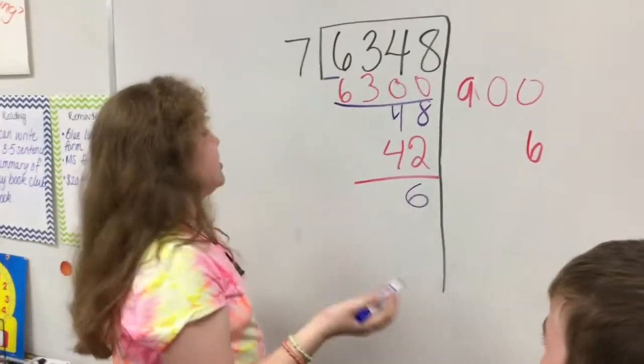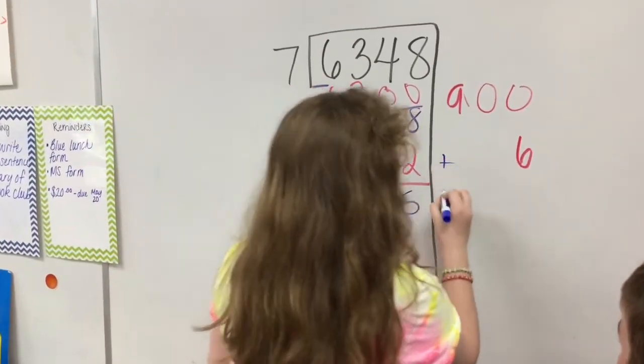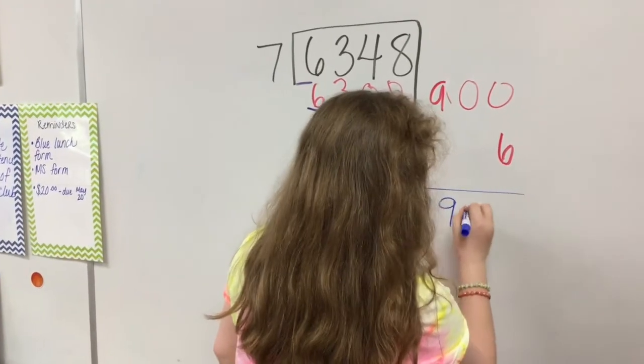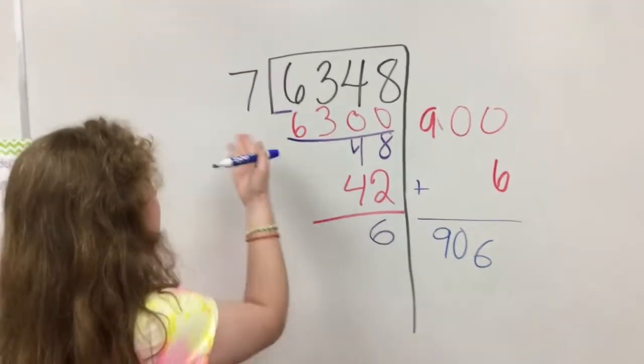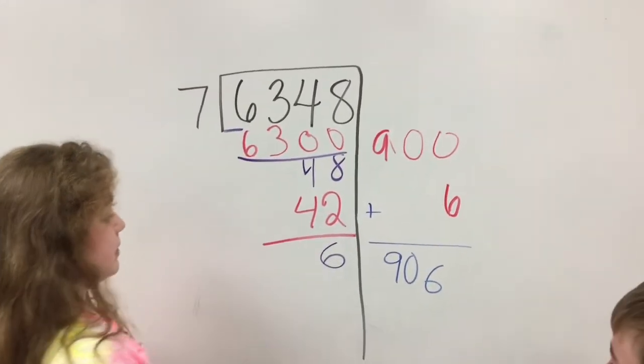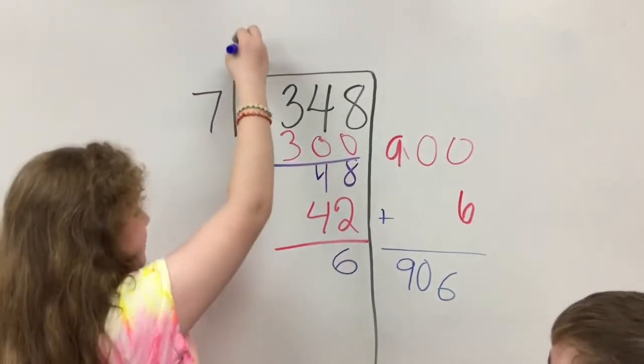Yeah. Okay, so now you're going to add this, and you know it's the end because once you add this, which will be 906, you know that it's done because six is less than seven, and the remainder will be six because it's right there, and then you would write up here 906 with a remainder of six.